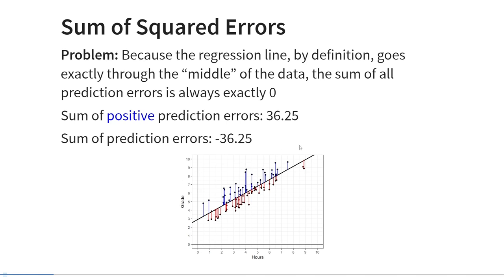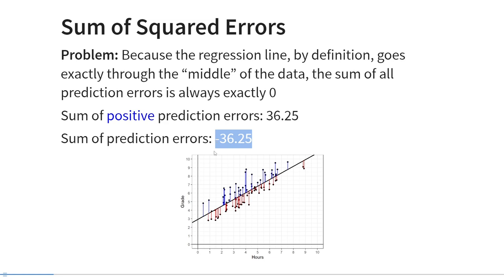No, there's a problem. Because the regression line by definition goes exactly through the middle of the data, the sum of all prediction errors is always exactly zero. All of the positive prediction errors are indicated with blue bars, and all of the negative prediction errors are indicated with red bars. The sum of the positive prediction errors is +36.25 and the sum of the negative prediction errors is −36.25, so the total sum of every student's prediction errors would be zero every time.